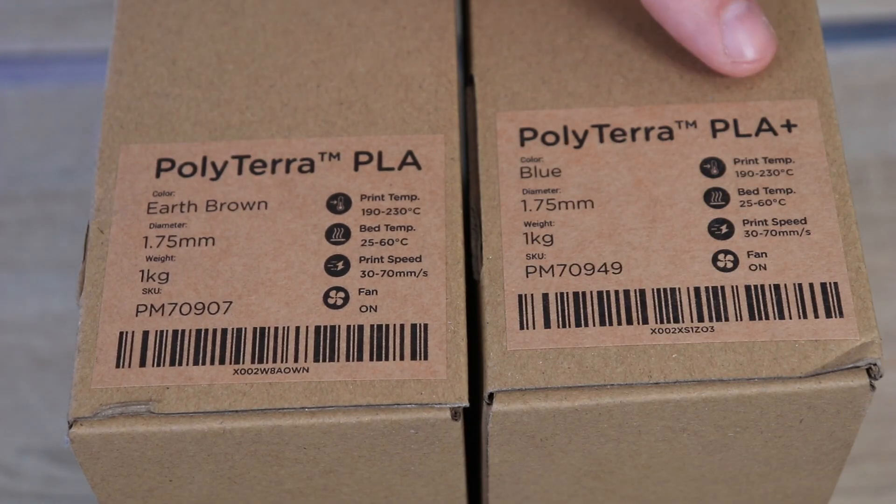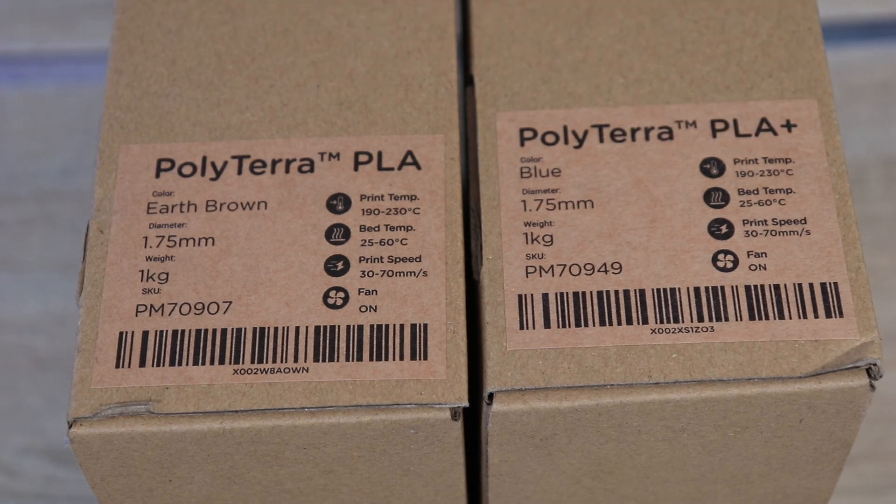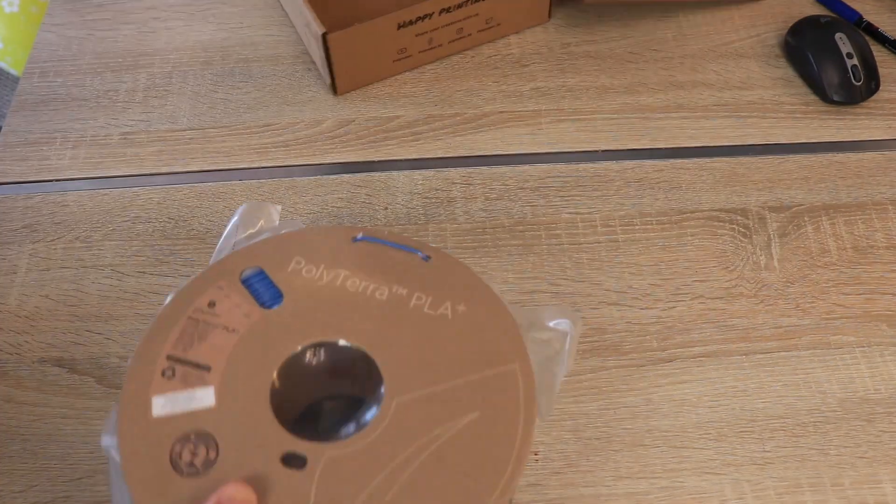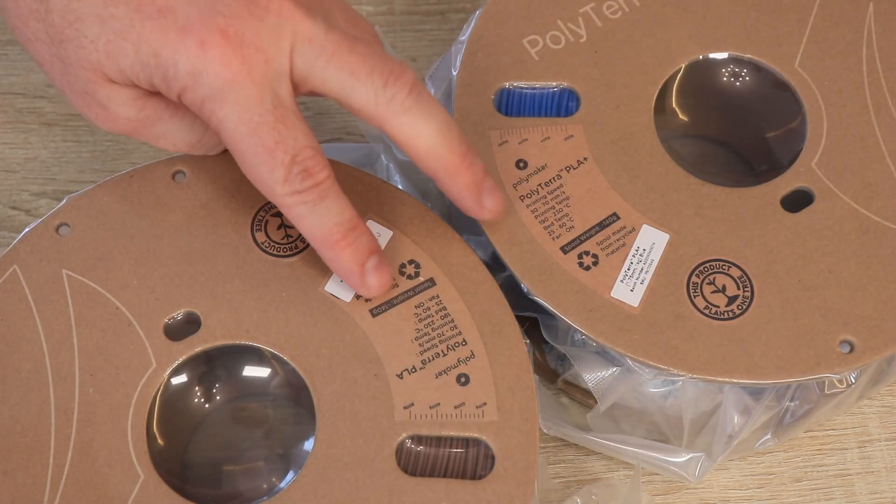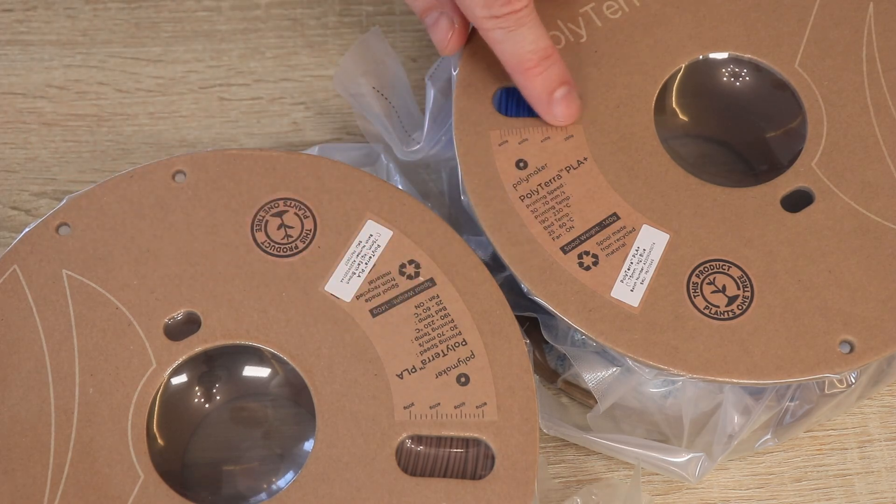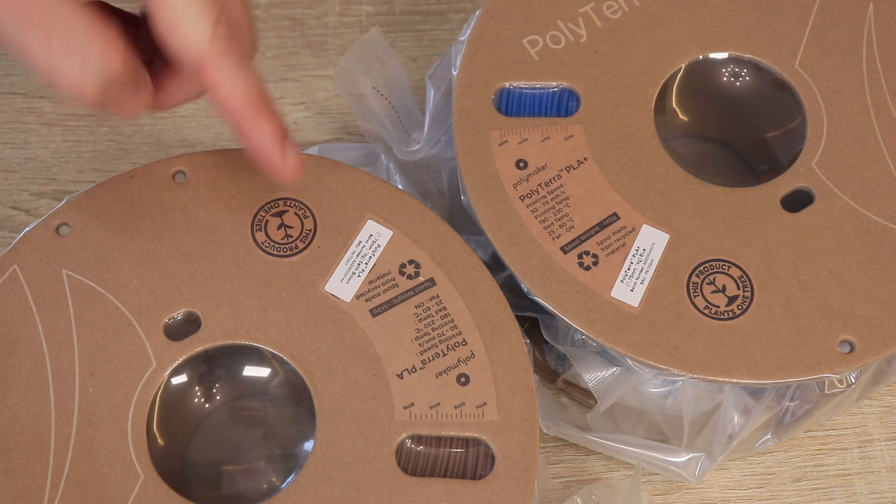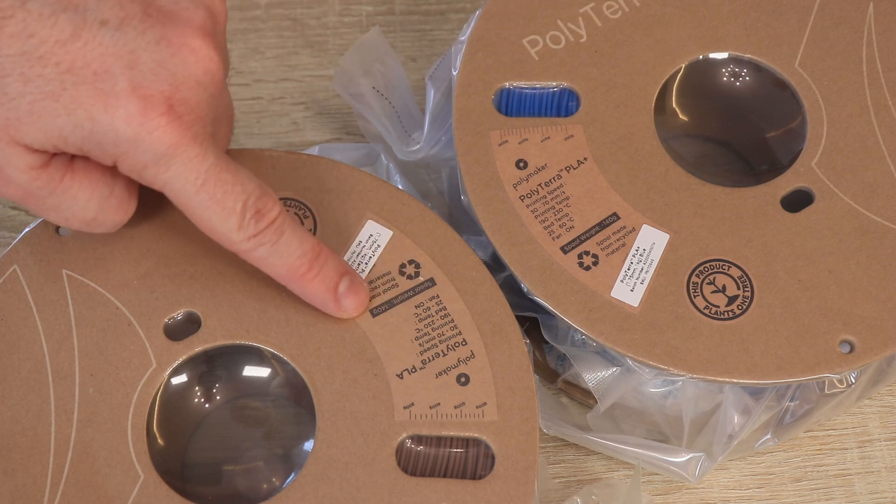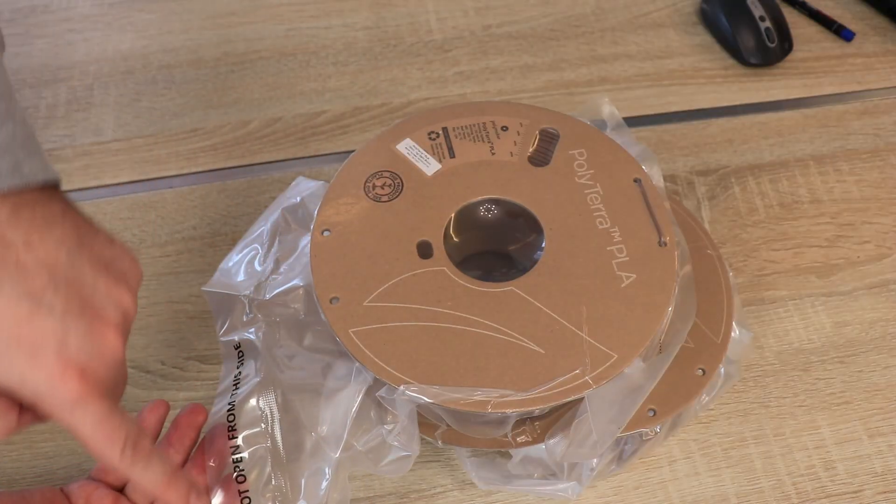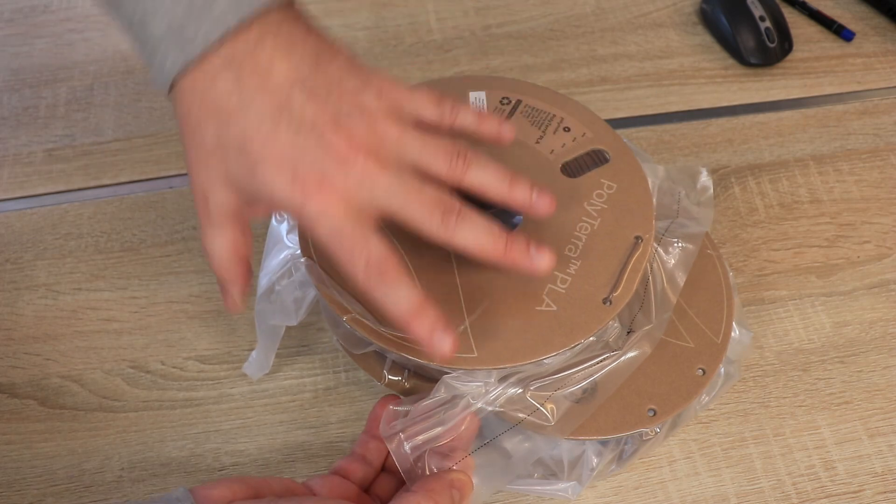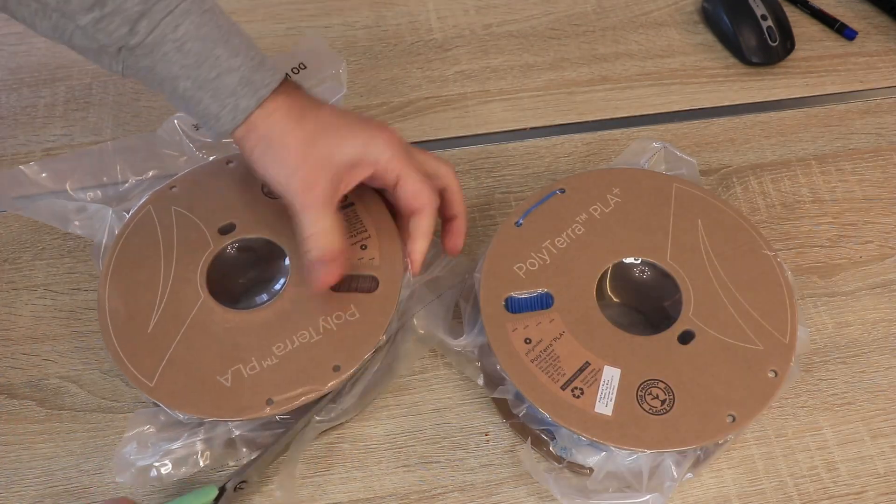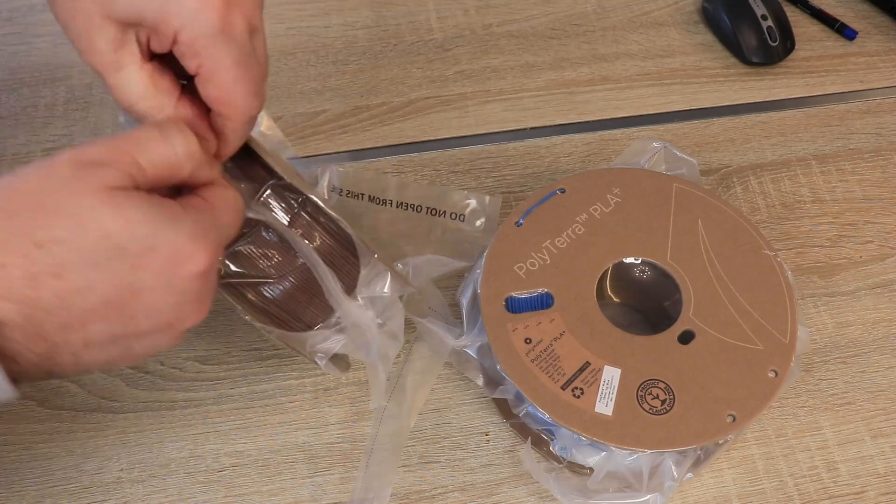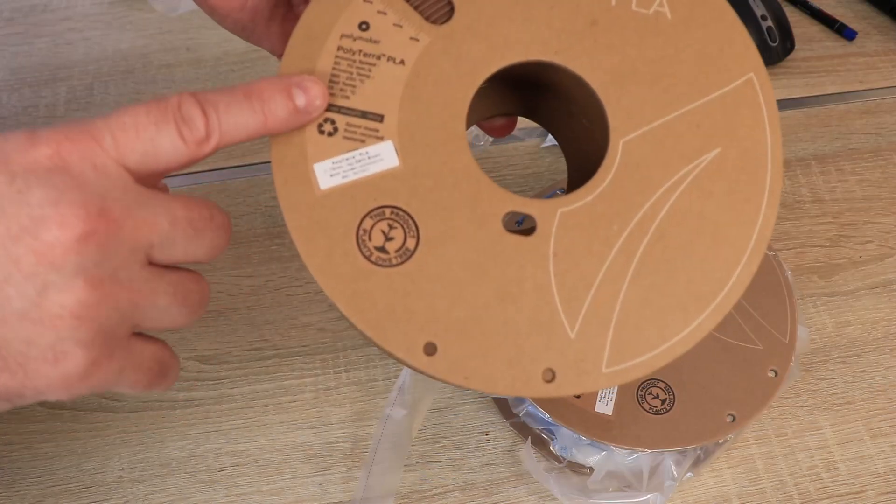PLA is in earth brown color, the PLA Plus in blue color. In both cases the print temperature is between 190 and 230 degrees Celsius. They both arrived on this cardboard spool with a lot of useful information on the sticker, not only the print temperature but also a scale showing how much filament we have on the spool, and a very big plus that we have information about the weight of the empty spool. The bag is resealable, so don't open from this side but here, because after printing you can place back the filament with the silica gel inside and close it. This product even plants one tree.